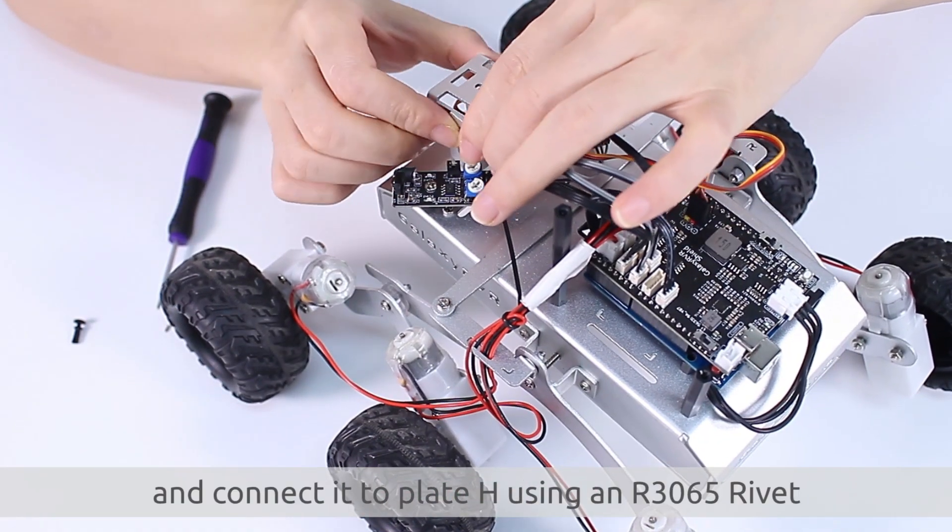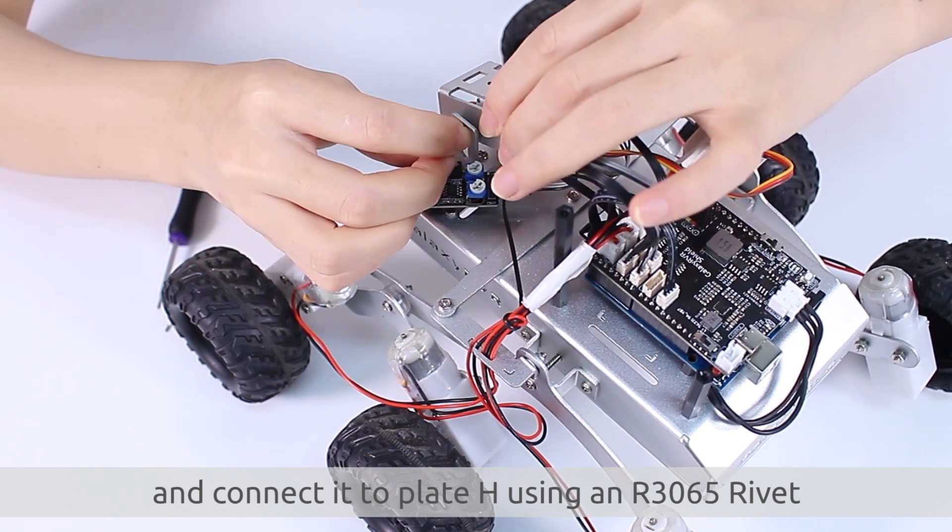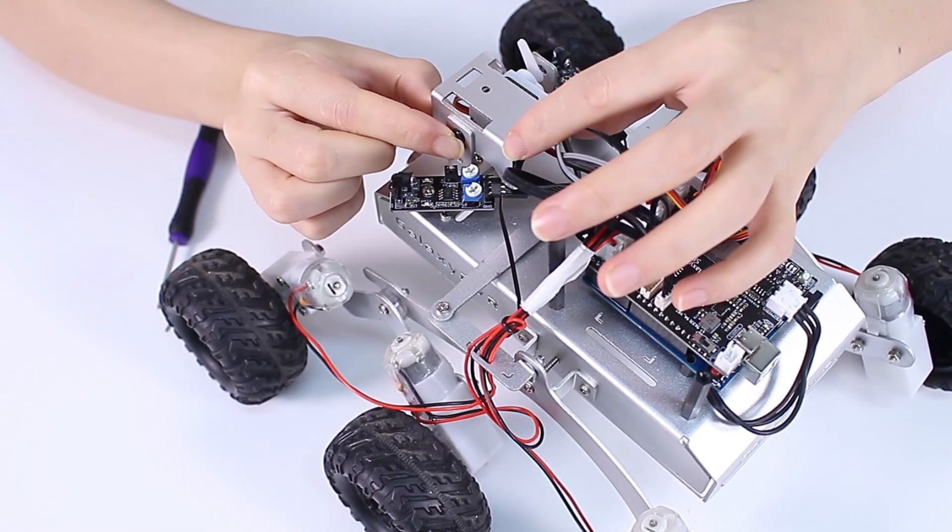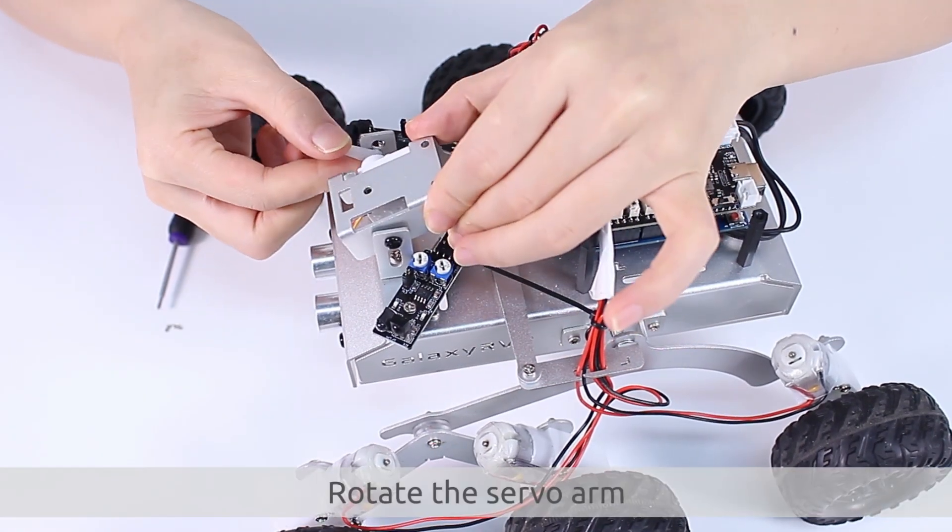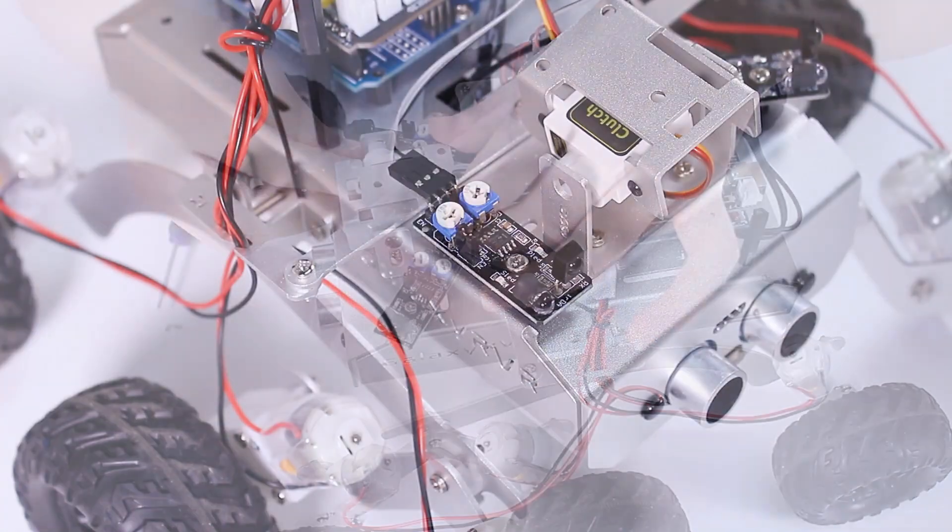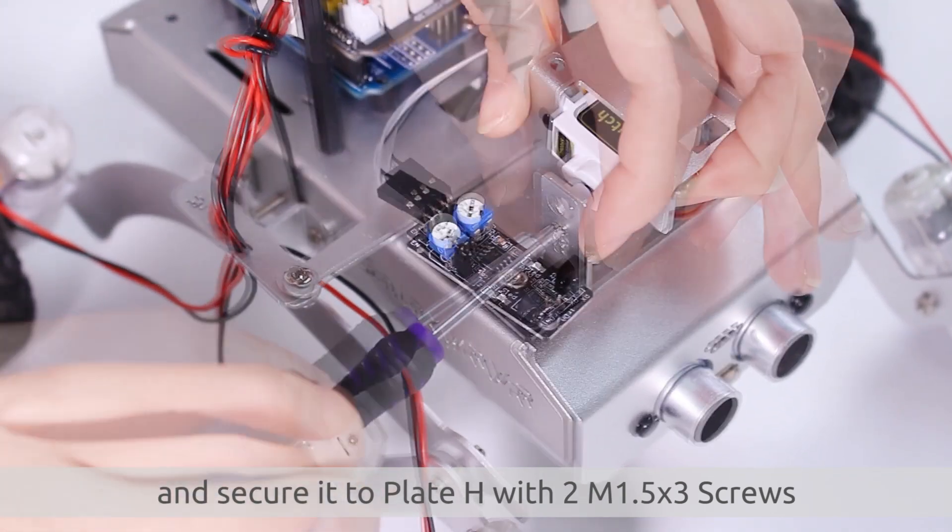Flip plate die back and connect it to plate H using an R3065 rivet. Rotate the servo arm and secure it to plate H with two M1.5 by 3 screws.